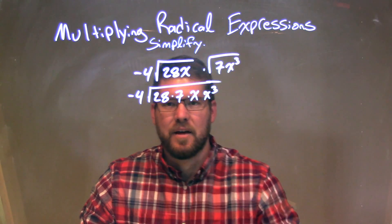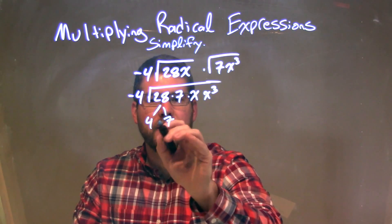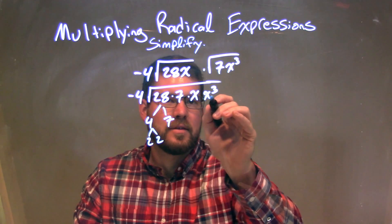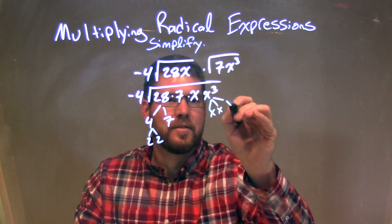So now let's break this down. 28 is 4 times 7, and 4 is 2 times 2. And then x is, I have 1x there, and then 3x right here, x, x, x.